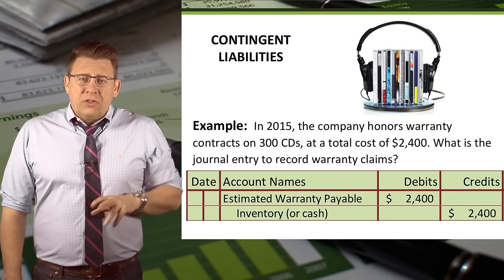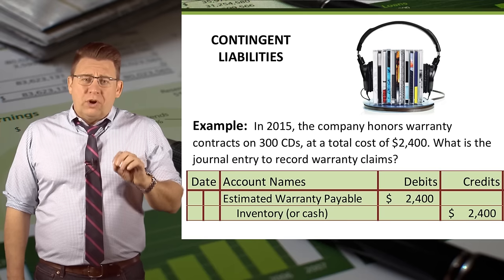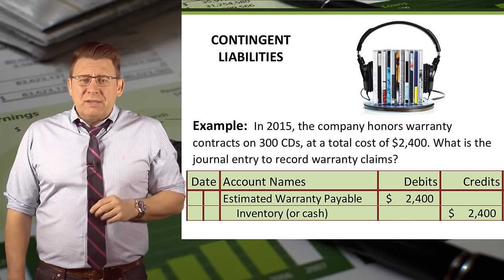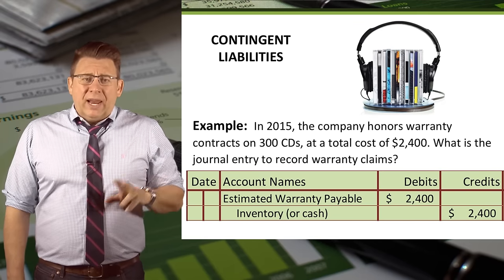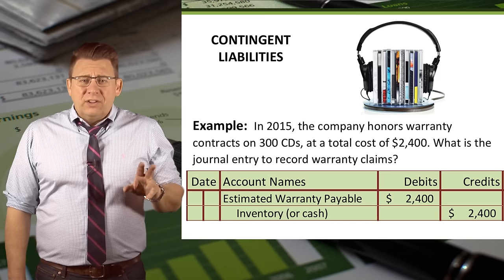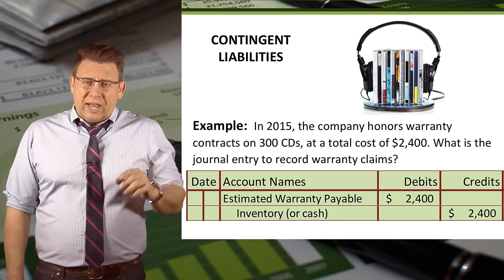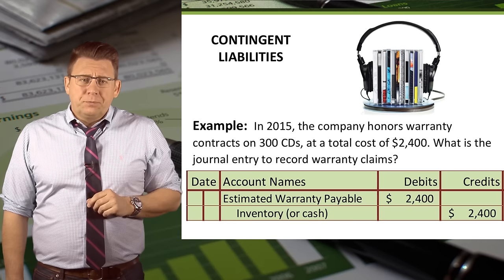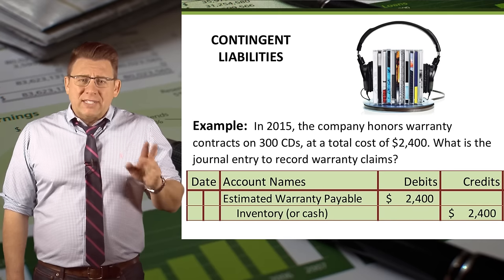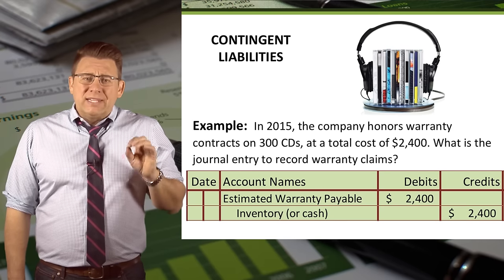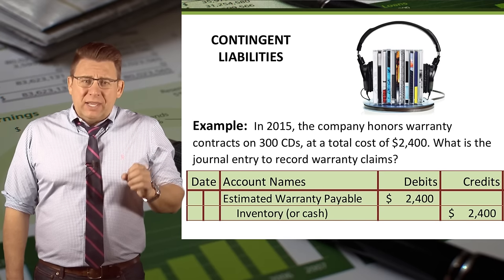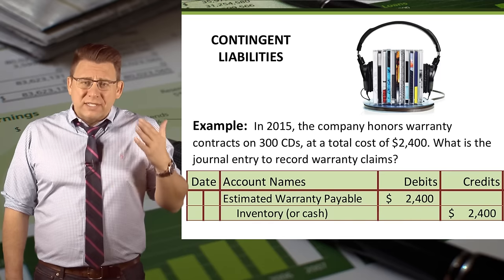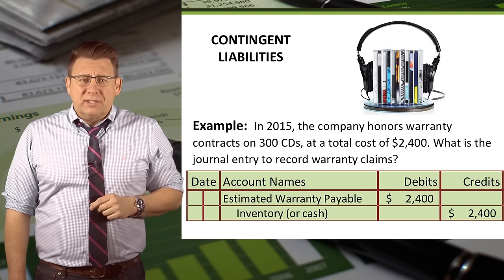The journal entry to record the warranty claims is a debit to estimated warranty payable and a credit to inventory or cash for $2,400. Estimated warranty payable is debited because the liability is decreased once some of the claims are settled.